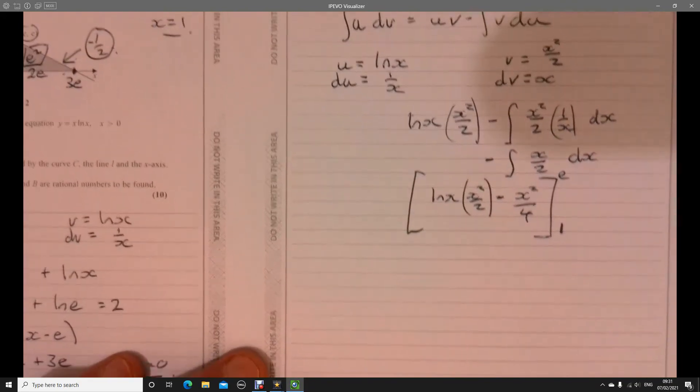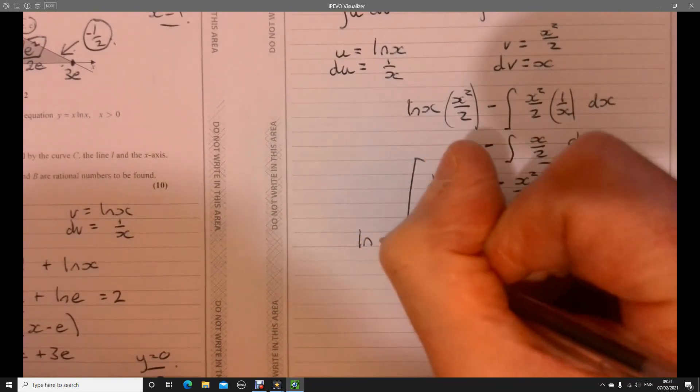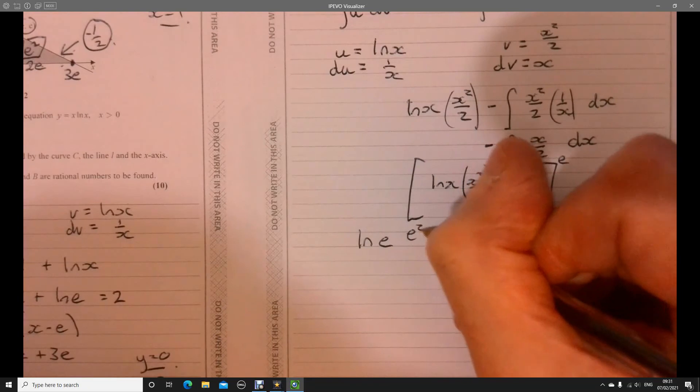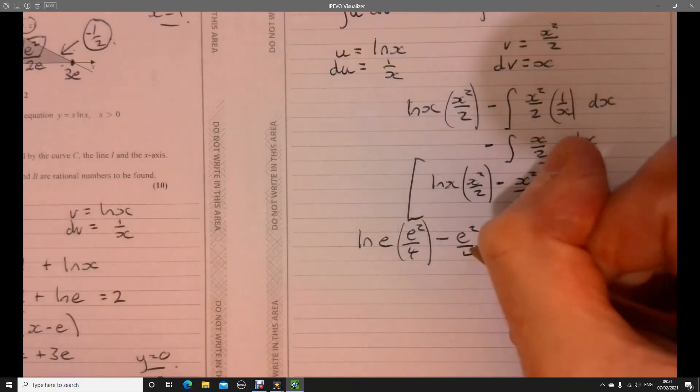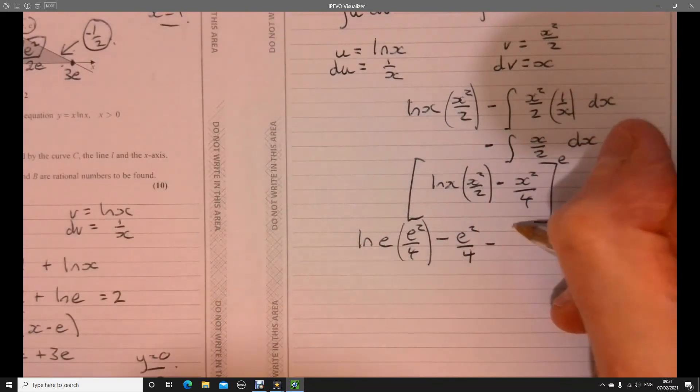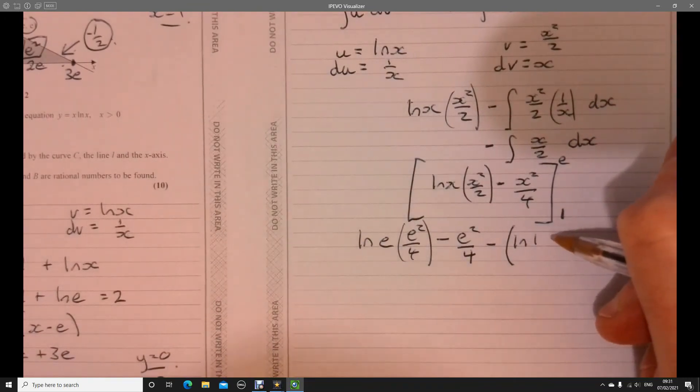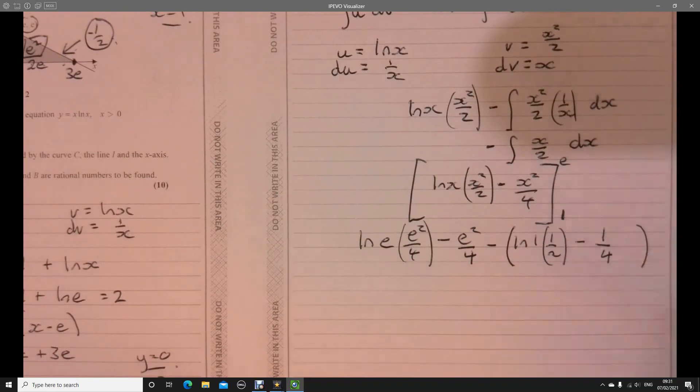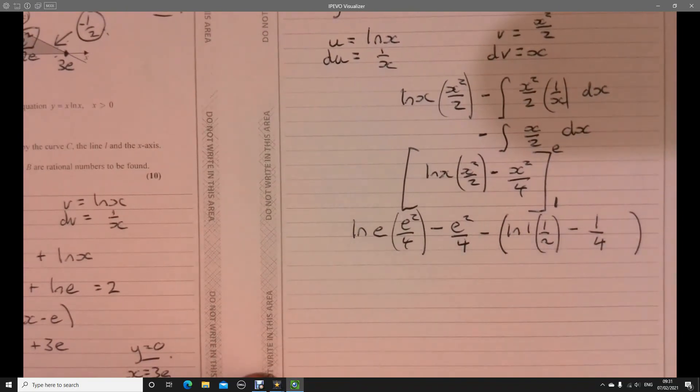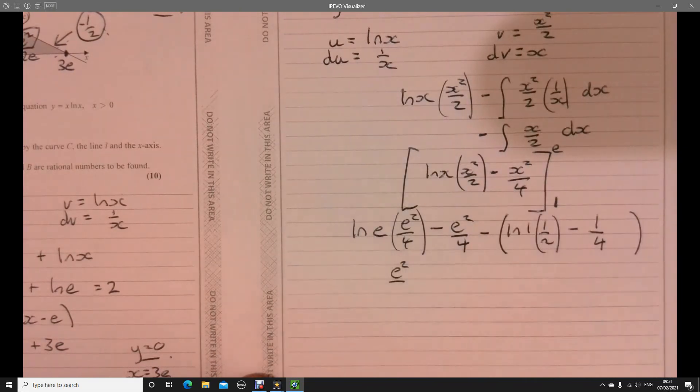So if we put those in, again, it just looks kind of harder than it really is. All right. Let's just go with it. So we're going to put E in. So just write the whole thing out. We've got ln E. E squared over 4. Take away E squared over 4. Take away and let's just pop in 1. So we've got ln 1. And then 1 squared over 2. So that's just a half. And take away a quarter. All right. Let's just tidy it up. Get rid of the bracket, really. OK. So what's that going to give us now? So we've got E squared over... So ln E, that's just 1. Looks scary, but it's nothing, really.